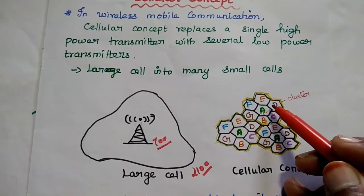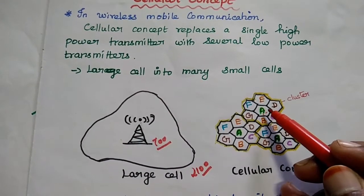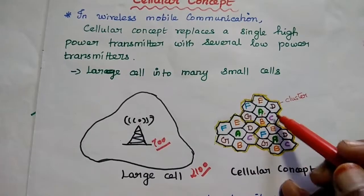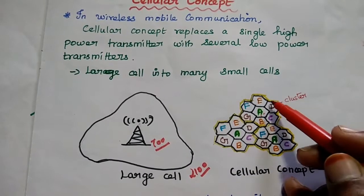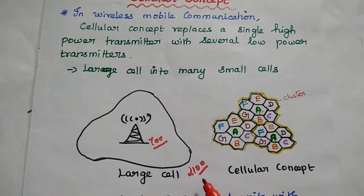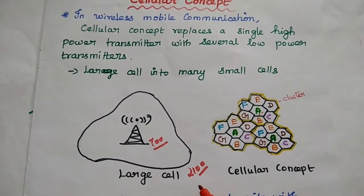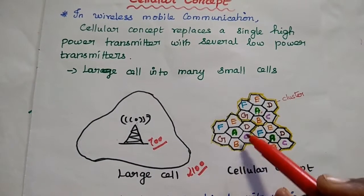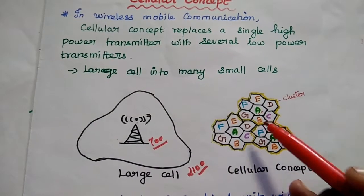Here, we can split the 700 channels equally among this cell. Each cell can cover up to 100 channels. So 100, 100, 100, we can get 700 channels within this cluster. If you want to increase the user capacity to 2,100, we can create 3 clusters.